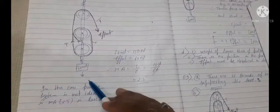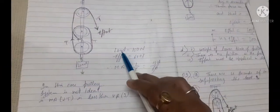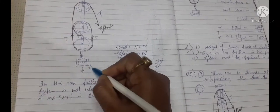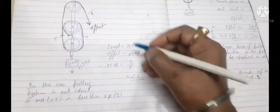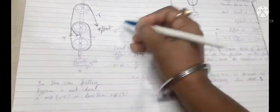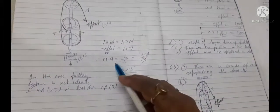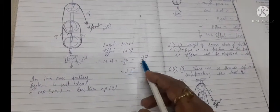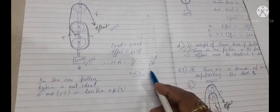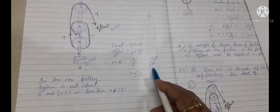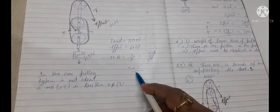Load equals to 150 newton and effort is given 60 newton. So mechanical advantage is what? Load upon effort. What is the value of load? It is 150. And what is the value of effort? This is 60. So zero zero cancel and it equals to 2.5.